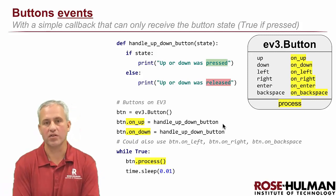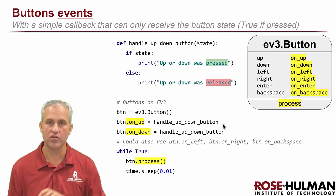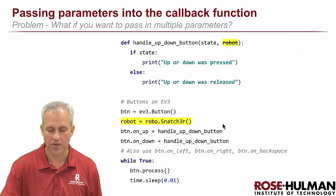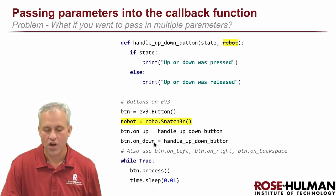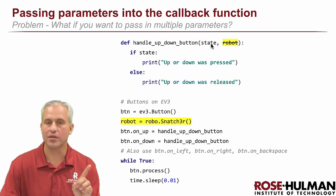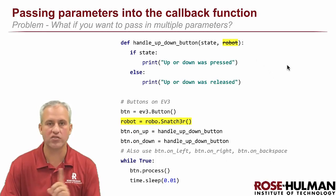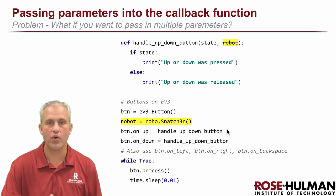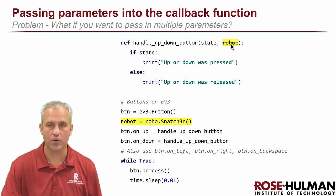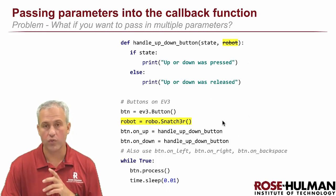The problem is we can't pass additional arguments to the function. Here's an example that does not work — we want to pass the robot to this function so you can do stuff with it and manipulate things. But with this syntax there's no way to pass anything in, so we have a problem.